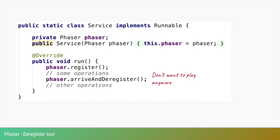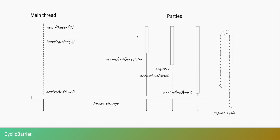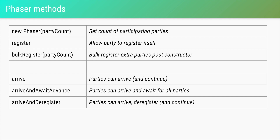Visually: the main thread registers itself by passing one to the Phaser constructor, performs a bulkRegister of two more parties, then calls arriveAndDeregister to deregister itself. Any other party that has the Phaser instance can register at any time, then call arriveAndAwait or arriveAndDeregister. Once all registered parties have arrived, the phase changes and the whole cycle can repeat.